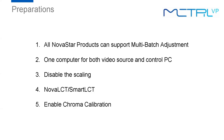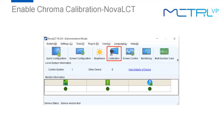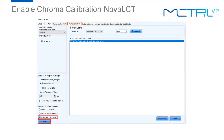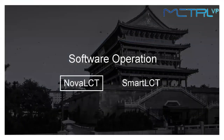Both NoLCD and SmartLCT software can do multi-batch adjustment. The fifth preparation is to enable chroma calibration. As mentioned, multi-batch adjustment lets you manually adjust the coefficients inside the modules, so we need to make sure the calibration coefficients are adjustable. In NoLCD software, after logging in, go to Calibration, select Online Calibration, go to the bottom-left corner, select chroma calibration, and hit the Save button to enable it.